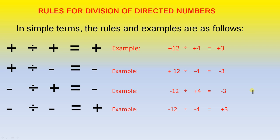Rules for division of directed numbers. In simple terms, the rules and examples are as follows. If you have a positive number and you divide it by a positive number, your answer is positive.